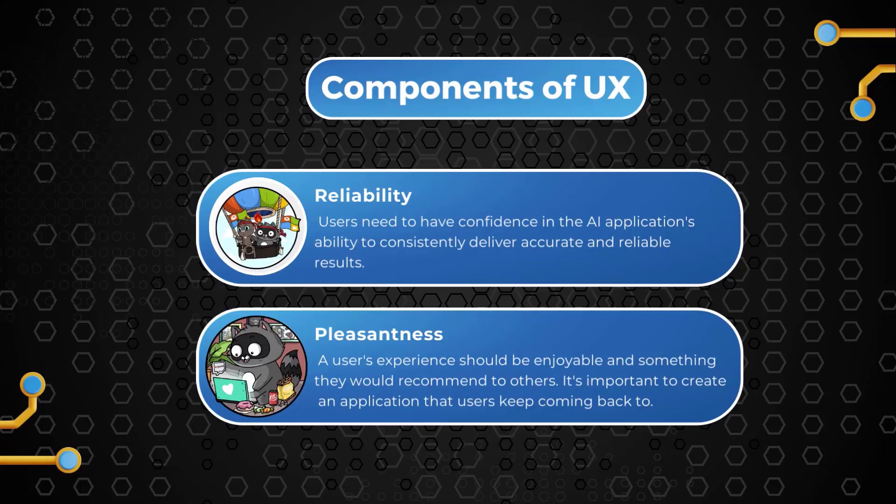Reliability is the application being able to perform the tasks it is stated to do consistently and without errors. Of course, AI cannot do things without errors, so we'll also be covering how to handle errors when they occur. And lastly is pleasantness — how enjoyable the application is. Does the user enjoy the experience? Is it something they can recommend to their friends? Is it something they will keep coming back to?